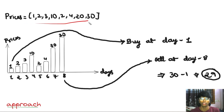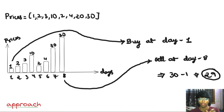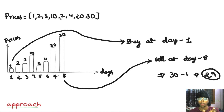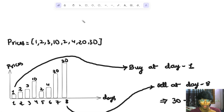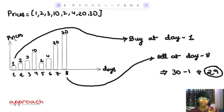So the question is, first we will look at the prices. We have some days on the x-axis and prices on the y-axis. Let's go through the prices in order — second price, third price, fourth price. We have now four days: 1, 2, 3, 4, and prices 10, 2, 4, 20, 30.